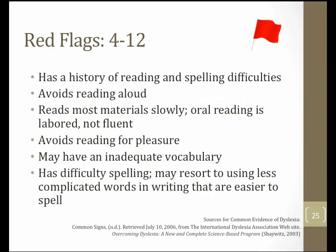In upper elementary, moving into middle and secondary, flags for students at risk for dyslexia include a history of reading and spelling difficulties, avoiding reading out loud, reading slowly with labored and non-fluent oral reading, avoiding reading for pleasure, demonstrating inadequate vocabulary both spoken and written, having difficulty spelling, and resorting to using less complicated words in writing that are easier to spell rather than attempting to use phonetically challenging words they may own in their vocabulary.